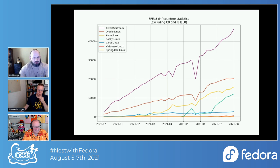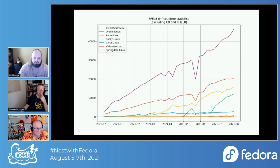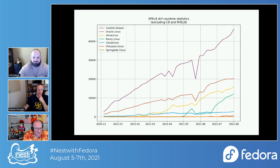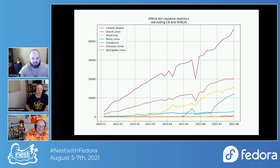I did another chart that takes out the top two so you can see the growth of the various distributions in the RHEL family. Springdale Linux is at the bottom — it averages 60 systems a week. I left it in as baseline noise; once you've beaten Springdale I started graphing distributions individually.